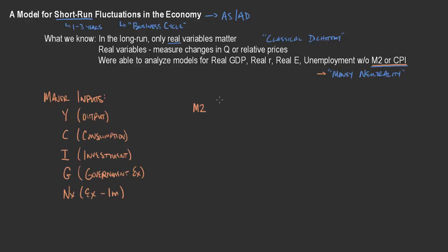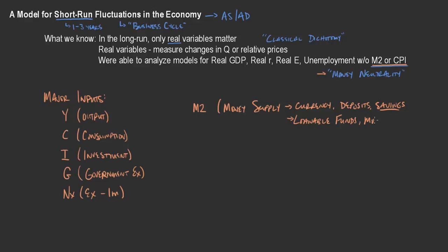We know that M2 is the money supply. Generally speaking, we could also think about M0 as currency, or M1 just as deposits. M2 would be talking about currency, deposits, and savings as well. This is important because the savings component really gets at loanable funds that we've discussed. We've talked about how there's really a money multiplier, and that money multiplier really comes into the banking sector — the Federal Reserve can create a certain amount of money, but then we multiply that because there's a certain amount the bank must hold in reserves, and they loan out the rest, going into the investment side as well.